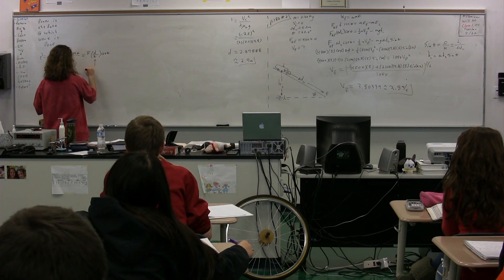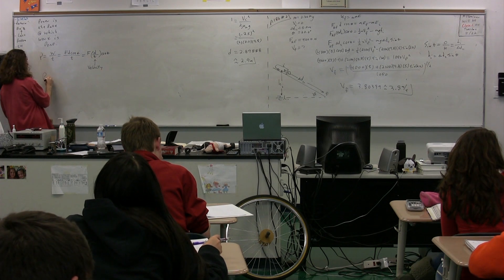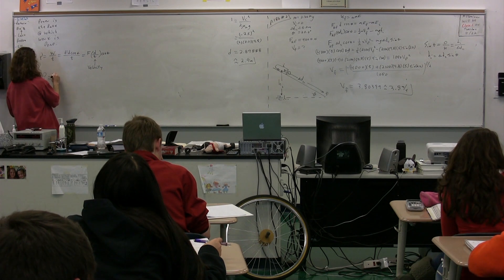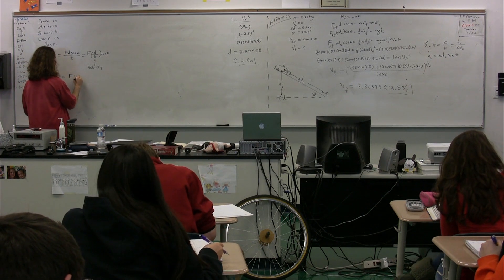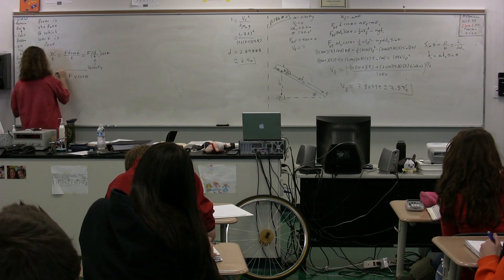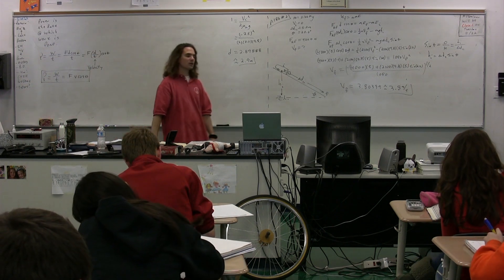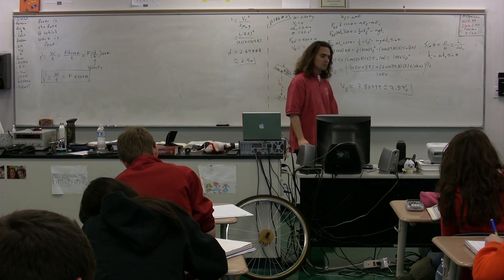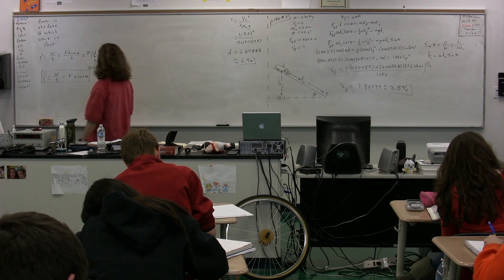Power is equal to work divided by time. It's also equal to force times velocity times the cosine of theta. That is another box equation. Power equals work divided by time. It's also equal to force times velocity times the cosine of theta.